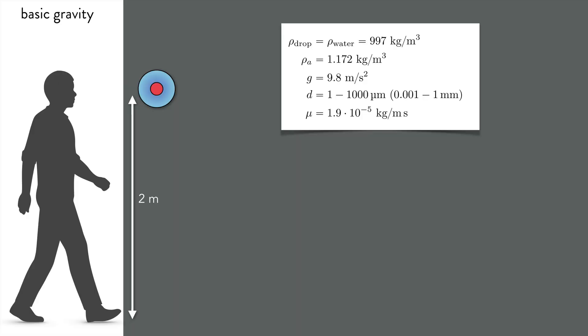Let's consider the most basic problem possible, which is what happens when a spherical droplet containing some infectious load, shown in red, is released from around mouth height, or say 2 meters from the ground.